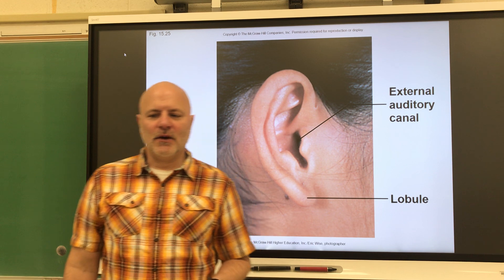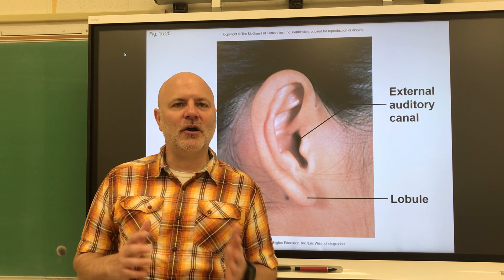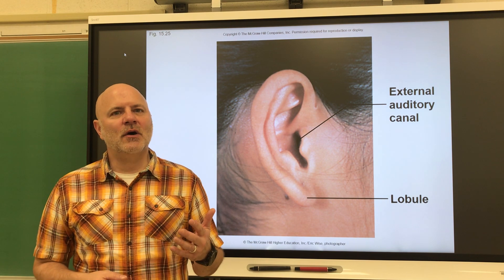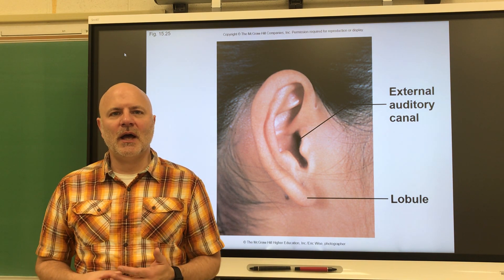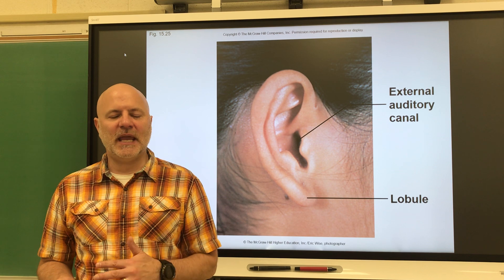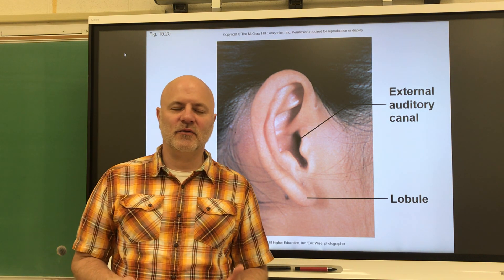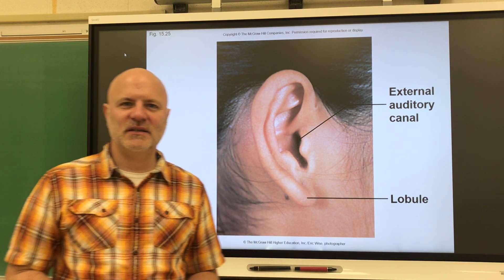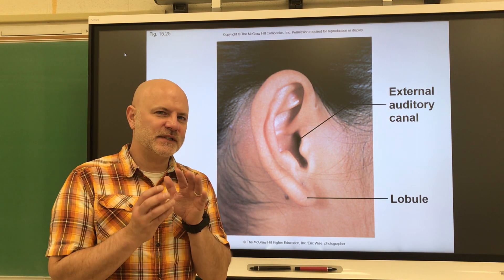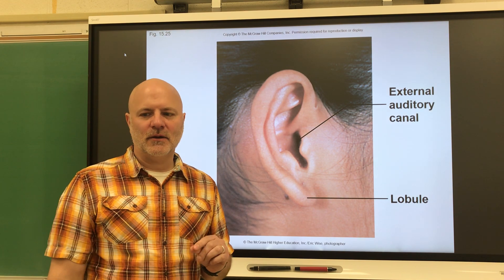Let's take a look at the ear. The ear we use for hearing and also equilibrium or balance. Both hearing and equilibrium use mechanoreceptors, which are receptors sensitive to mechanical pressure. They're basically all hair cells, and if they get touched they're going to send a signal.